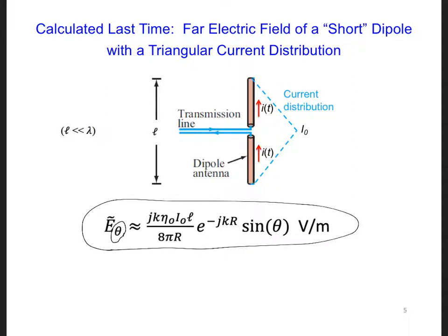If we know the electric field in the far field of this antenna, is there a way that we can determine what power is being radiated in the far field? See if you can calculate S, the time-average power density, in the far field of this short antenna.